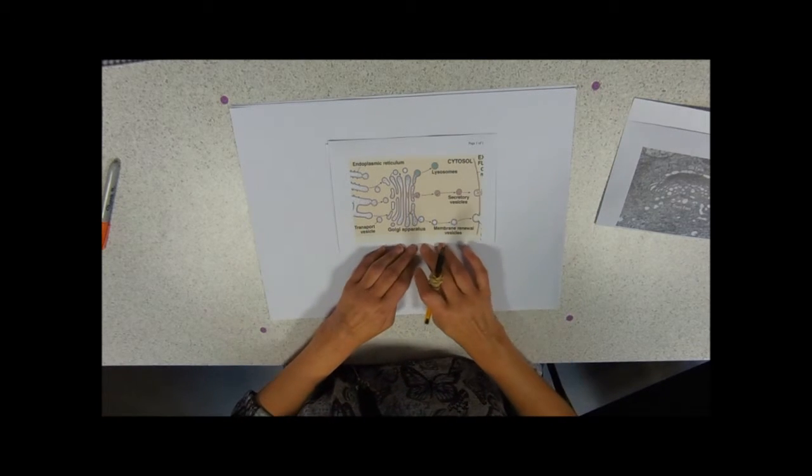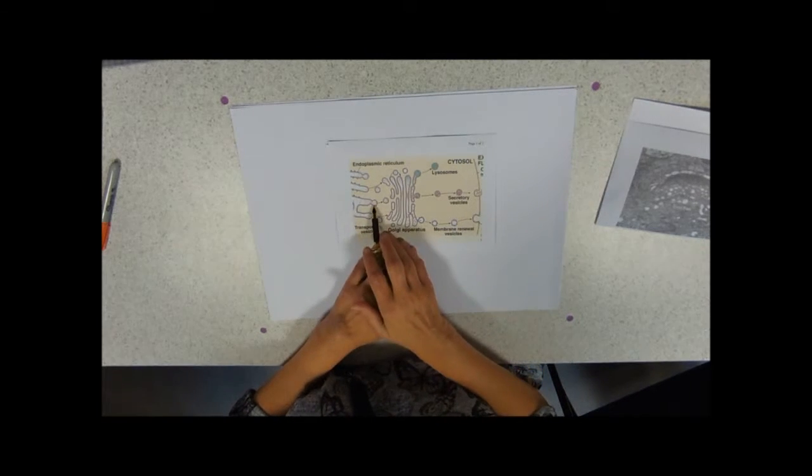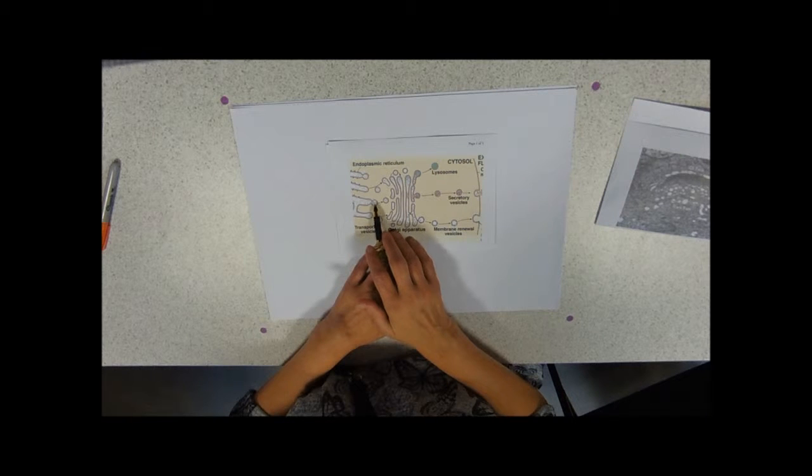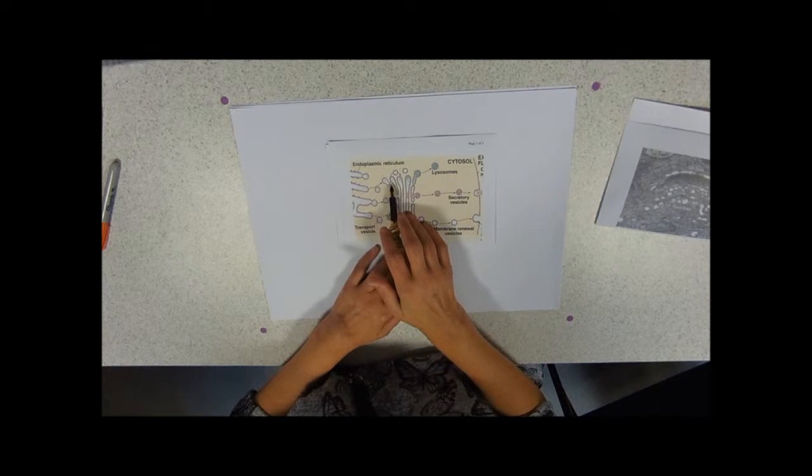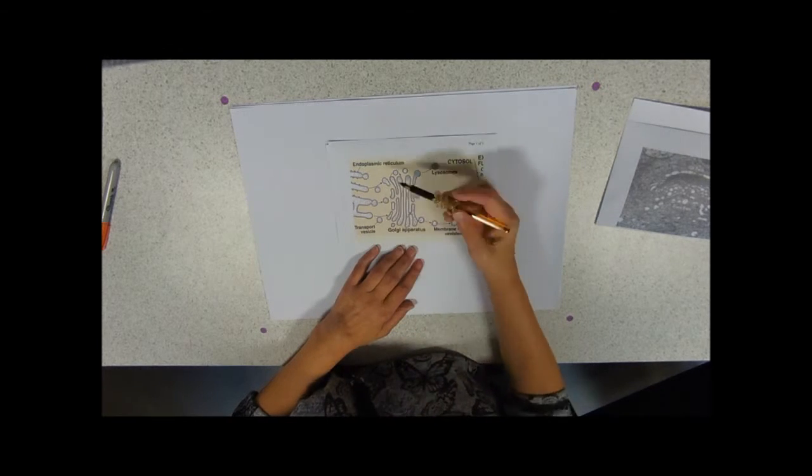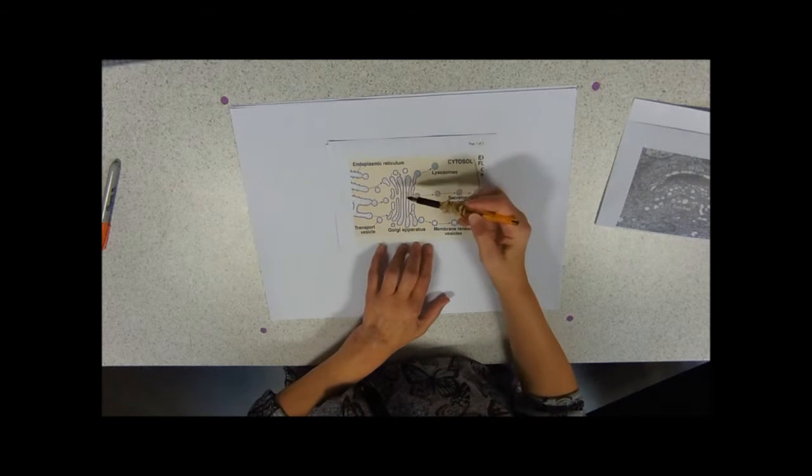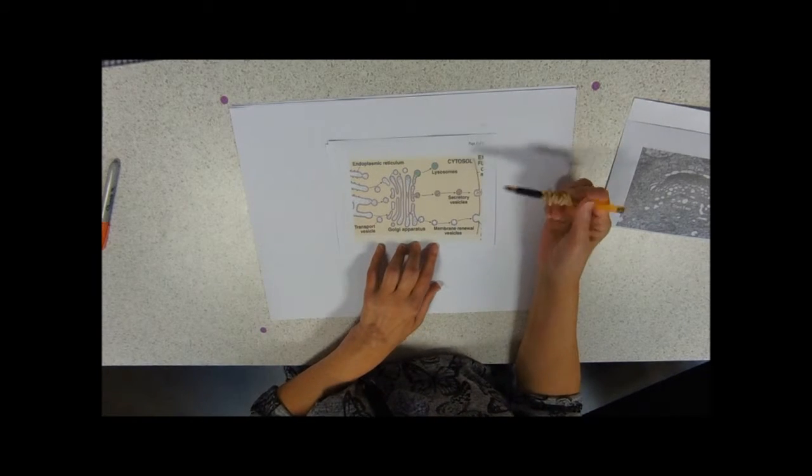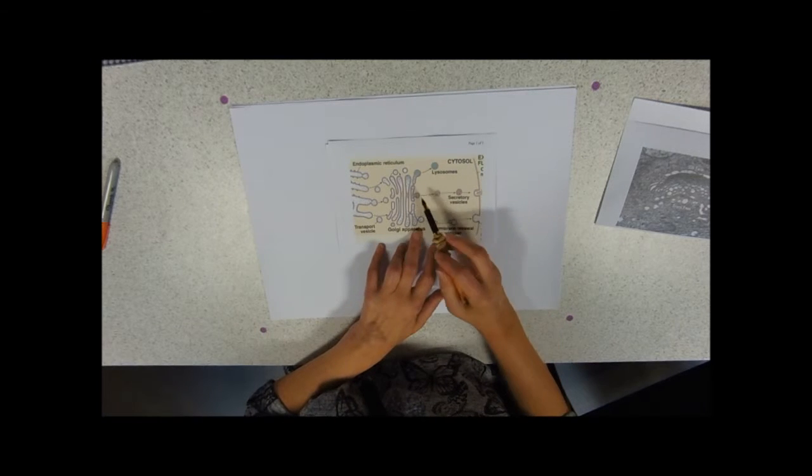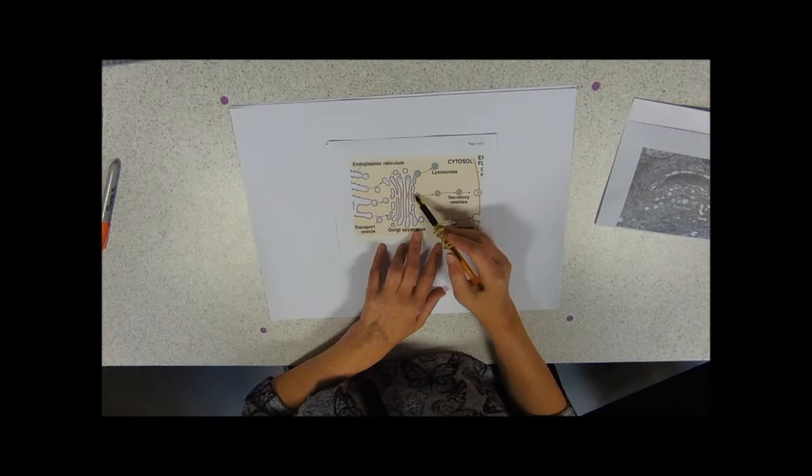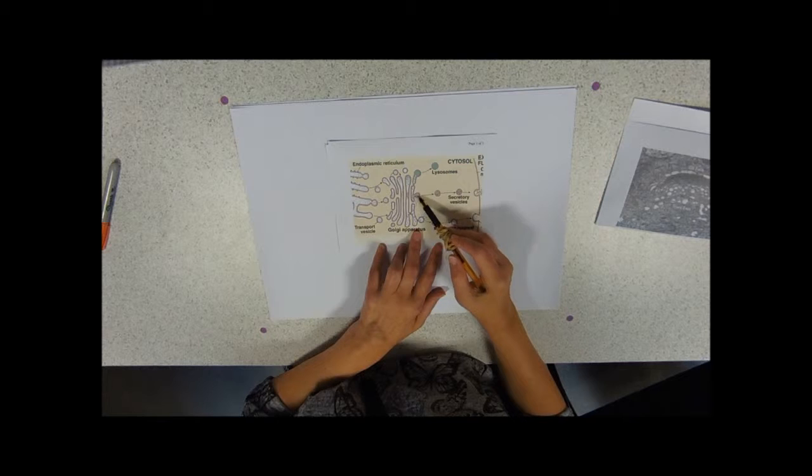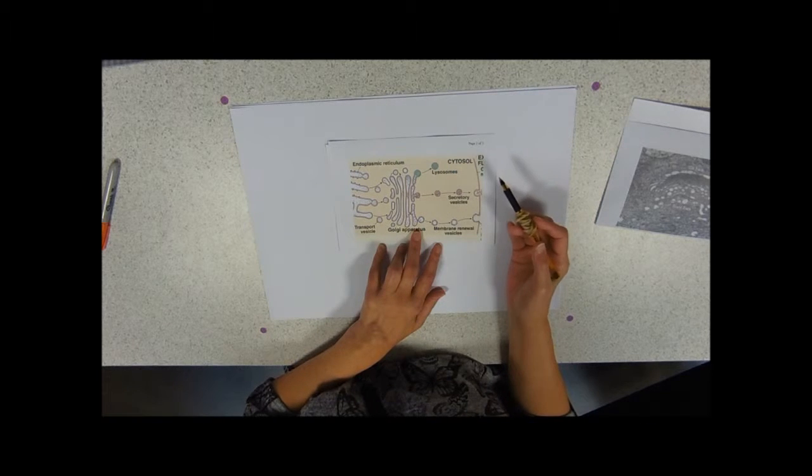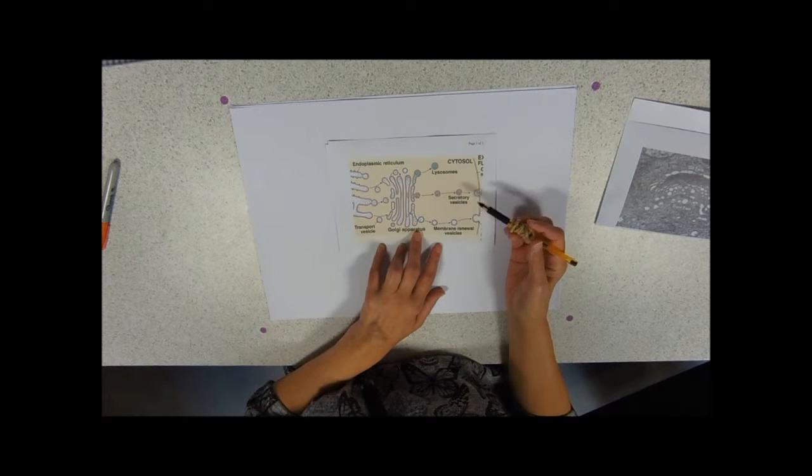Forming is from budded off endoplasmic reticulum containing the proteins, coalescing, forming these curved cisternae, protein being modified. And then at the other end, you can see on the trans face, we've got some vesicles budding off, containing the modified protein, perhaps.